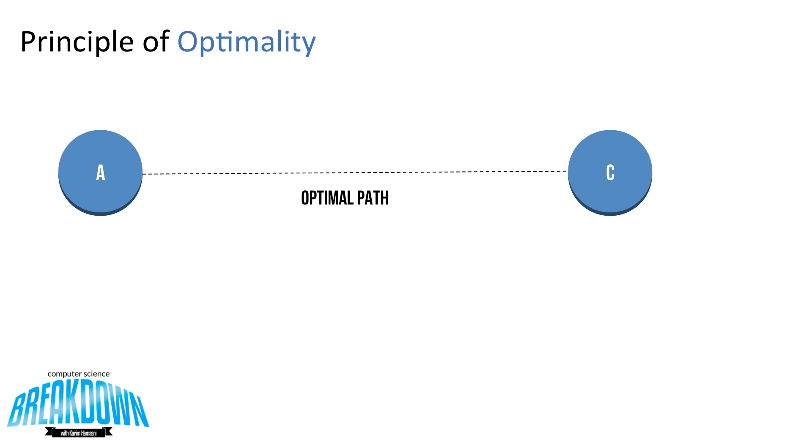So let's take a look at a very simple example. Let's say we want to go from node A to C and we have an optimal path. If that path has node B in the middle, then we know that the path from A to B is optimal as well as the path from B to C.